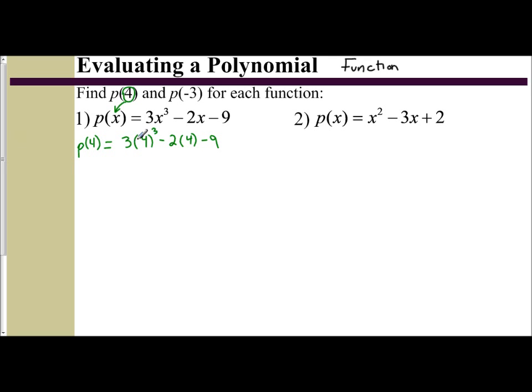So first, I have 3 times 4 cubed. Exponents come first. 4 cubed is 64. So 3 times 64, minus 2 times 4, so minus 8, minus 9. And so we have 3 times 64, we have 192, minus 8, and minus 9, which gives us 175.